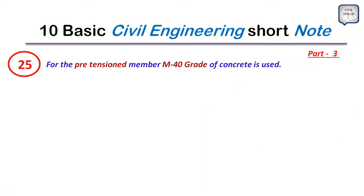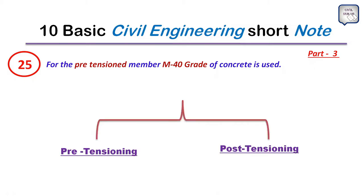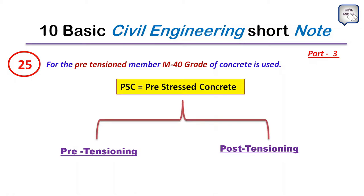Point 25: For pre-tensioned members, M40 grade of concrete is used. Pre-tensioning and post-tensioning are parts of PSC (pre-stressed concrete). For pre-tensioning, M40 grade concrete is used, and for post-tensioning, M30 grade of concrete is used.